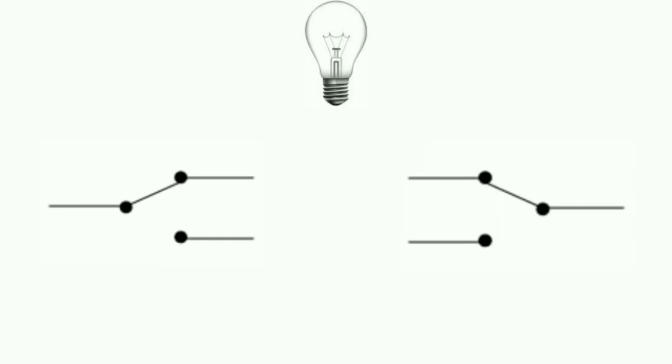To do wiring first of all we will take two two-way switches. We will connect switch one outgoing terminal one with switch two outgoing terminal one by one wire. Now we will connect switch one outgoing terminal two with switch two outgoing terminal two by a wire.